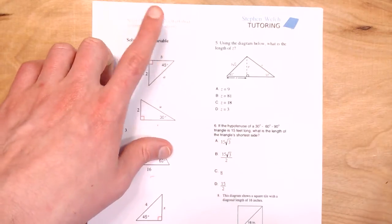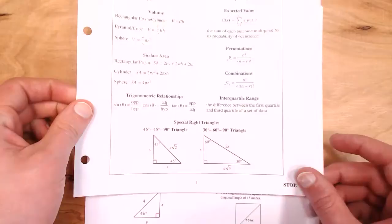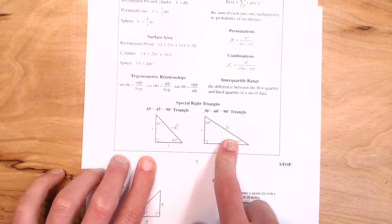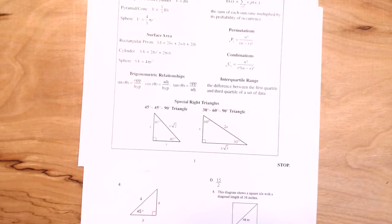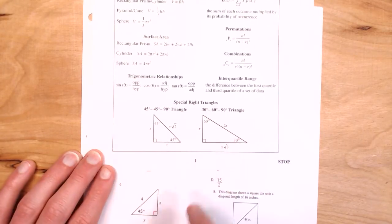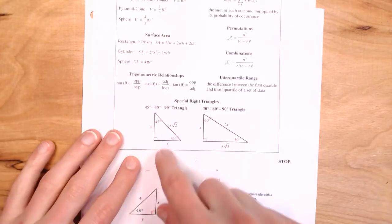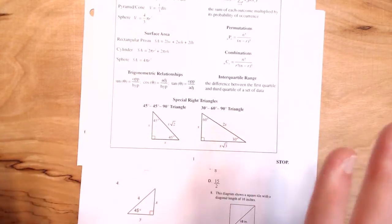This is the special right triangles worksheet, and these will be given to you in your graduation test. There are two to know: the 45-45-90 and the 30-60-90 triangles. The whole point is that if you have one of these special right triangles, the ratio of the sides is a special fixed ratio.